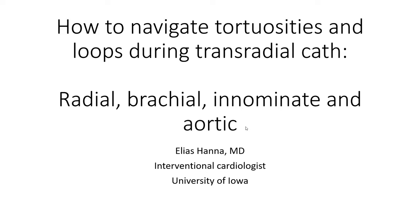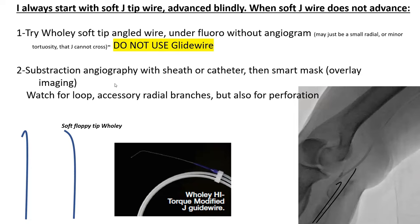I want to talk today about tortuosity and loops during transradial cath, and I will focus on radial and brachial tortuosities. Generally, after I obtain radial access, I always start with a soft J-tipped wire that I advance blindly without fluoro.